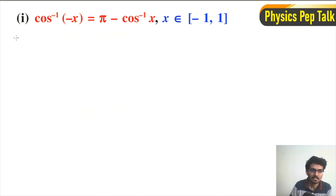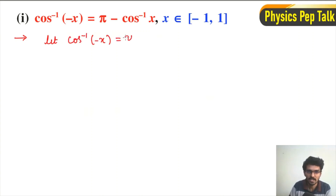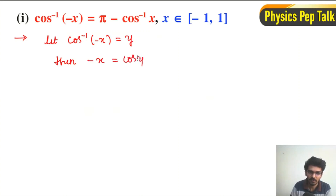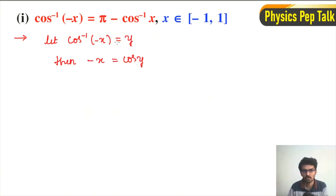If we will prove it, let us consider cos⁻¹(-x) = y. Then this can be written as -x = cos(y). I have operated cos on both sides, so cos(cos⁻¹(-x)) = cos(y).